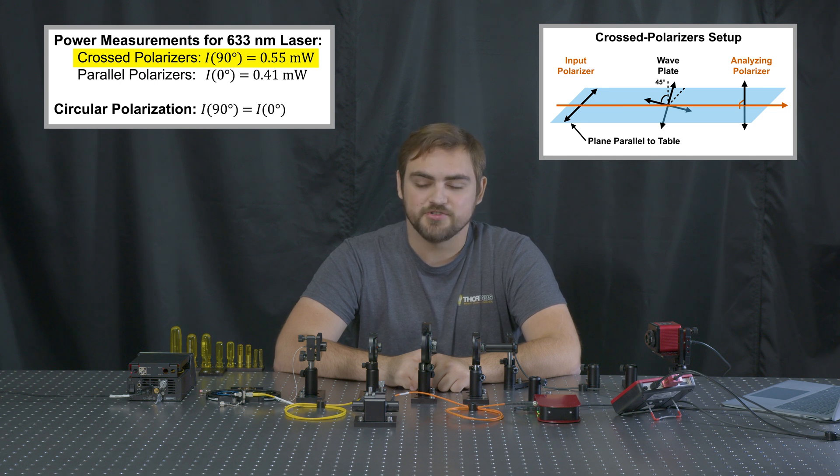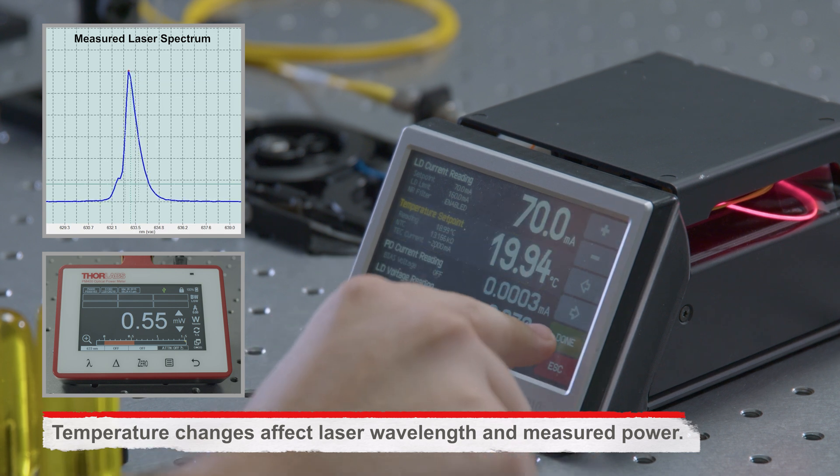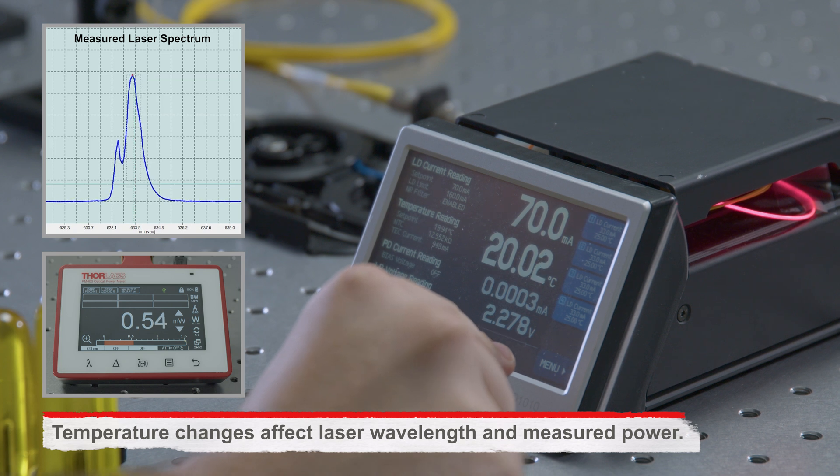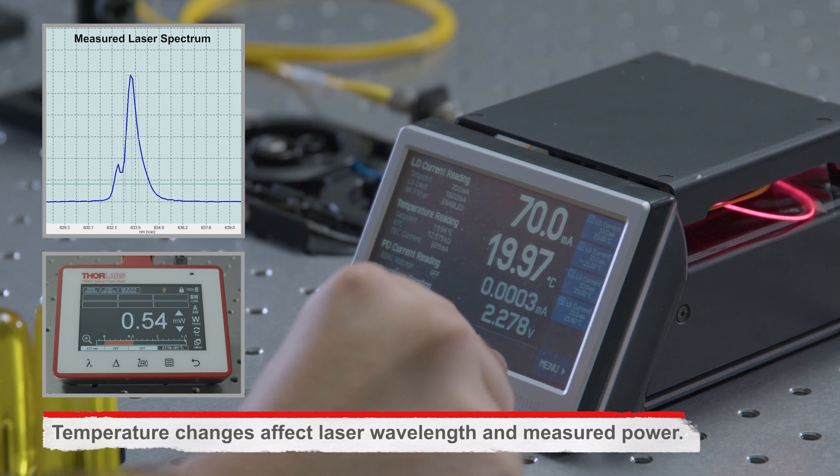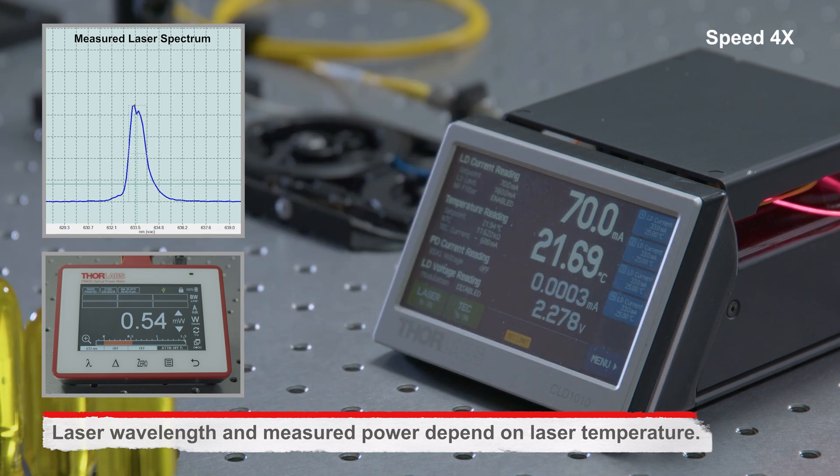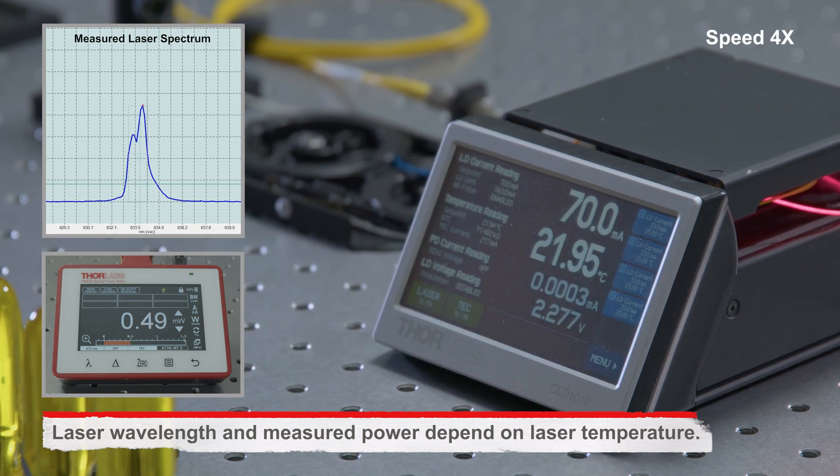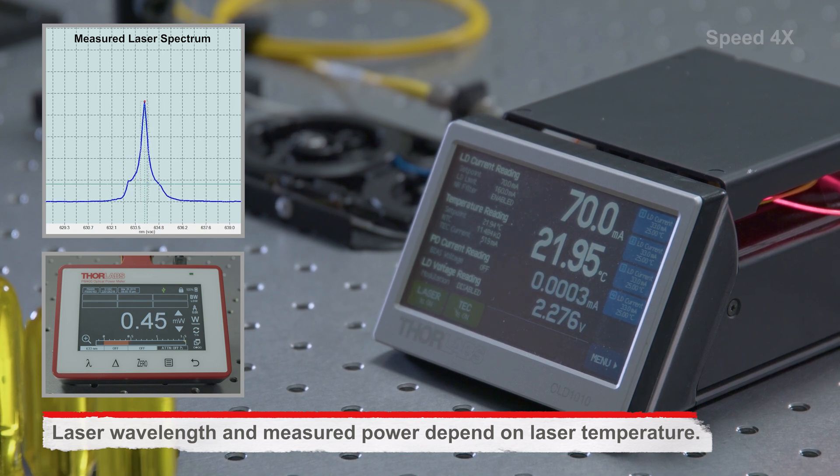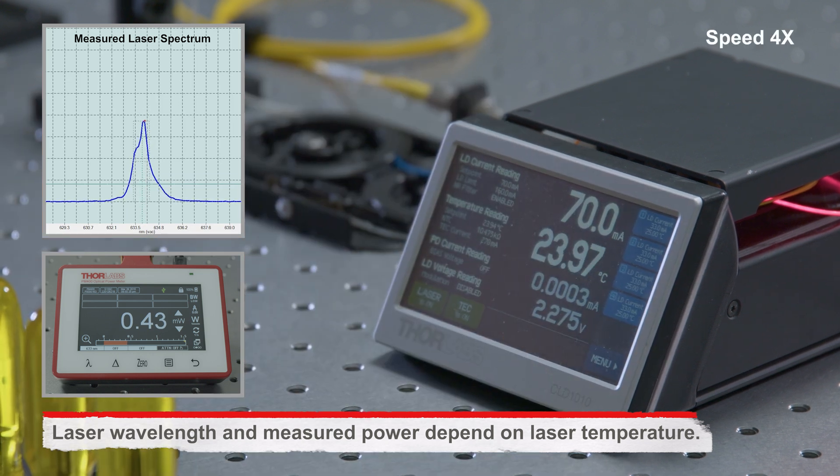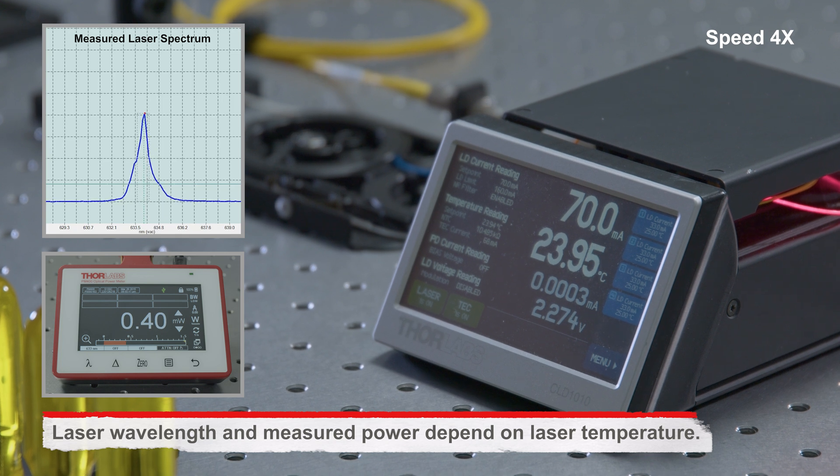If I increase the temperature, we do see the power decrease, so I can continue moving in this direction. I'm also being mindful to allow the actual temperature of the diode to keep up with the temperature set point. I'm waiting for the power to stabilize a bit at this temperature.